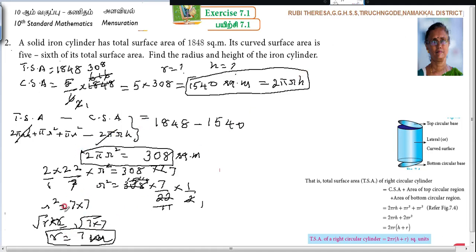Next, this r you can substitute in the curved surface area of the cylinder. You found out here 2πrh = 1540. So 2 times 22/7 times, in the place of r, what value are you going to substitute? 7 times h equals 1540. The 7s cancel. You want to find out h, so keep h as is. h = 1540 divided by...